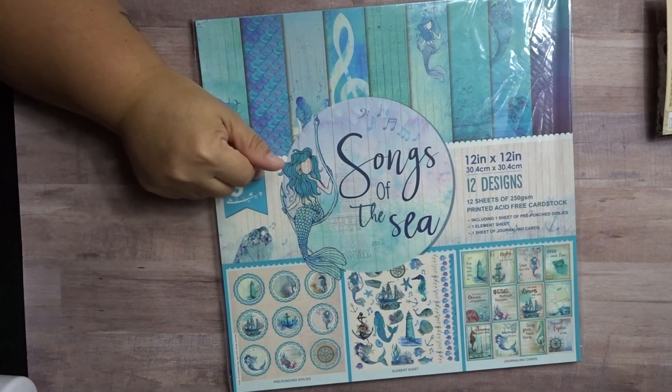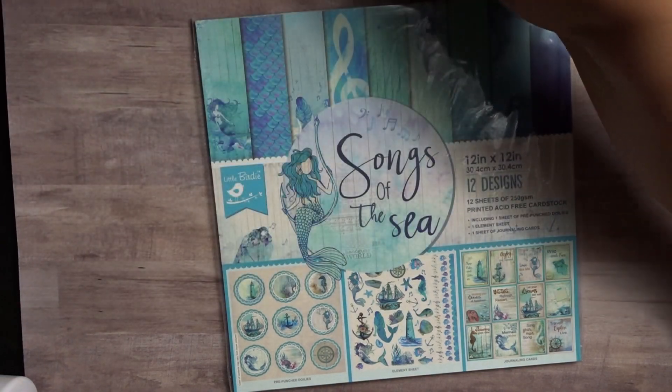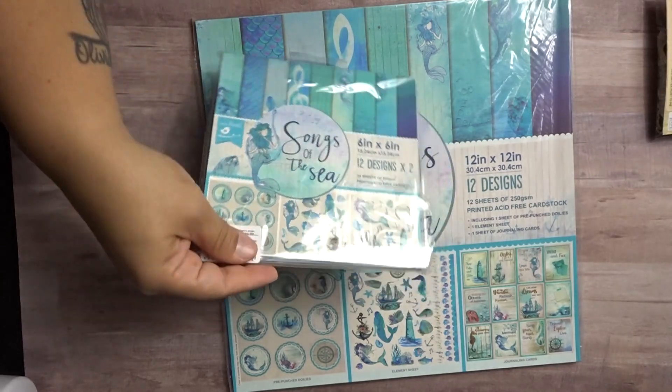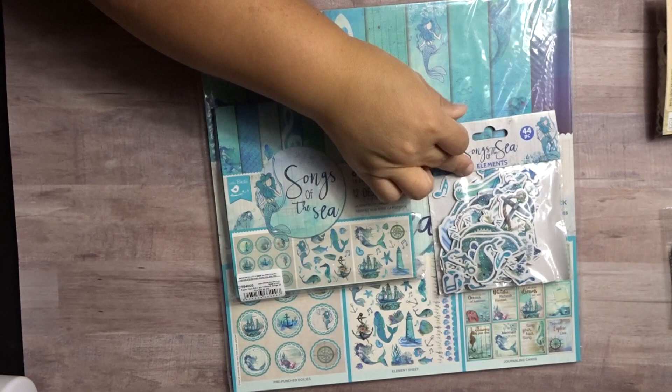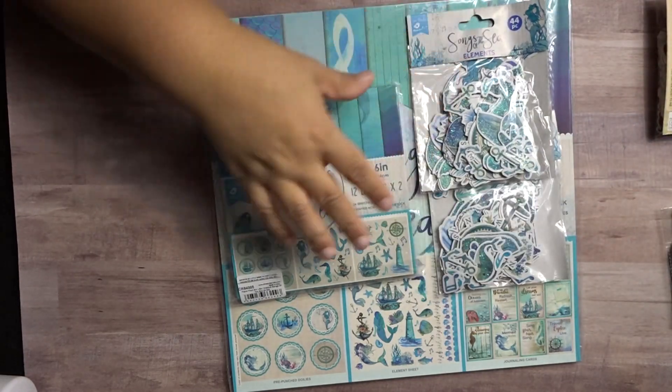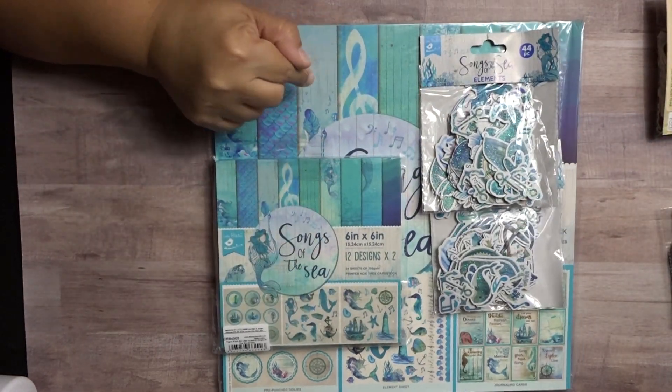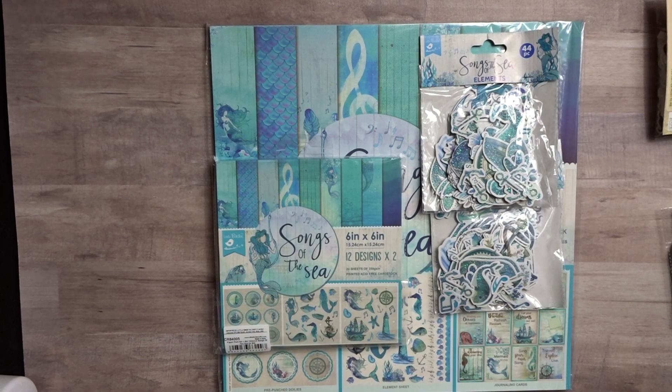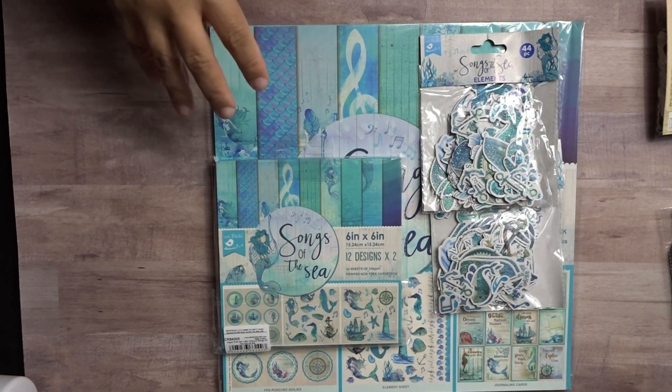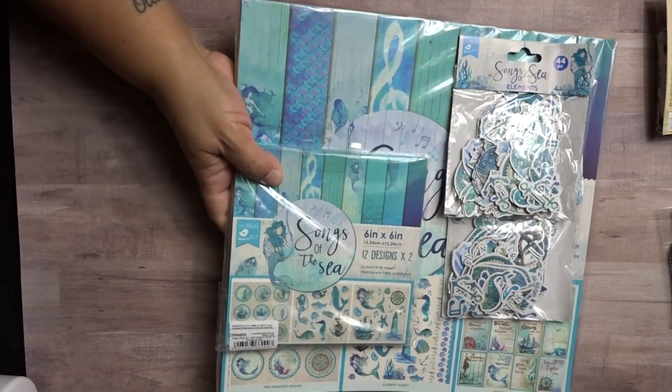So, then I have the Song of the Sea in 12x12. So, I have the 12x12 with the 6x6. And then, remember, I got the embellishments to go with it. Because I wanted to make... I have lots of papers that will... Solids that can go with this. So, I can make myself a nice, decent-sized album. Because, you know, a lot of these albums don't come with enough paper to make a nice-sized book. So, I got that one.